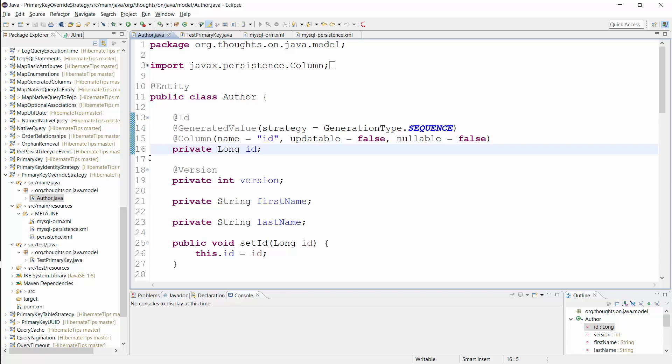Here you can see the Author entity with the default mapping. I annotated the ID attribute with the generatedValue annotation and set the strategy to sequence.